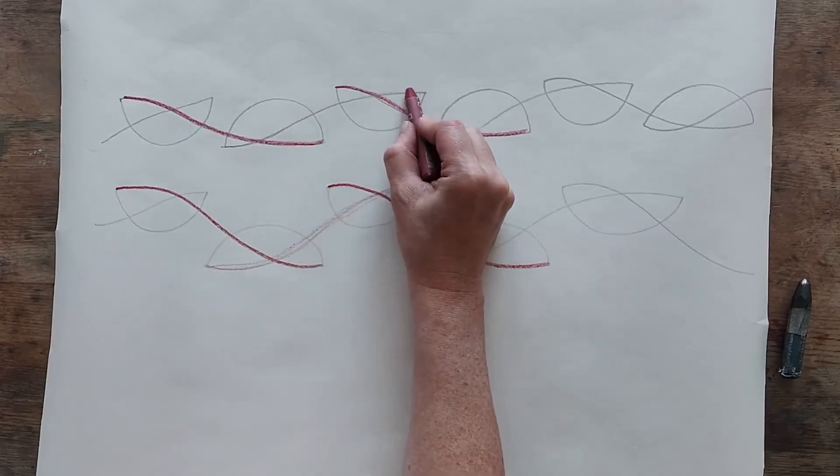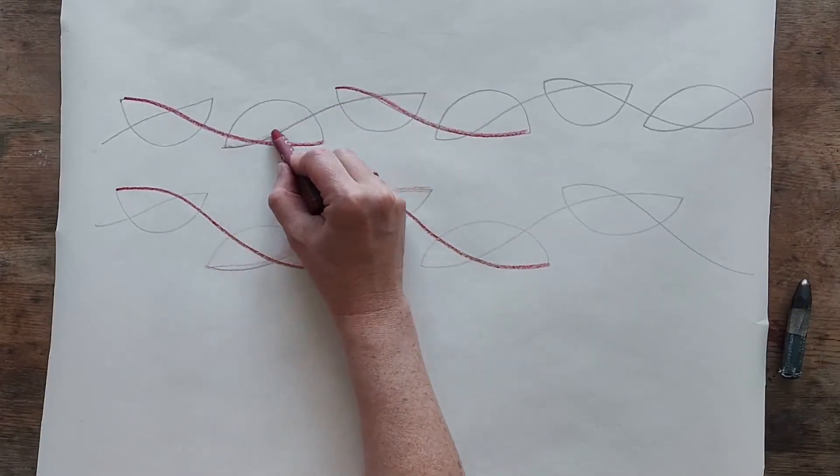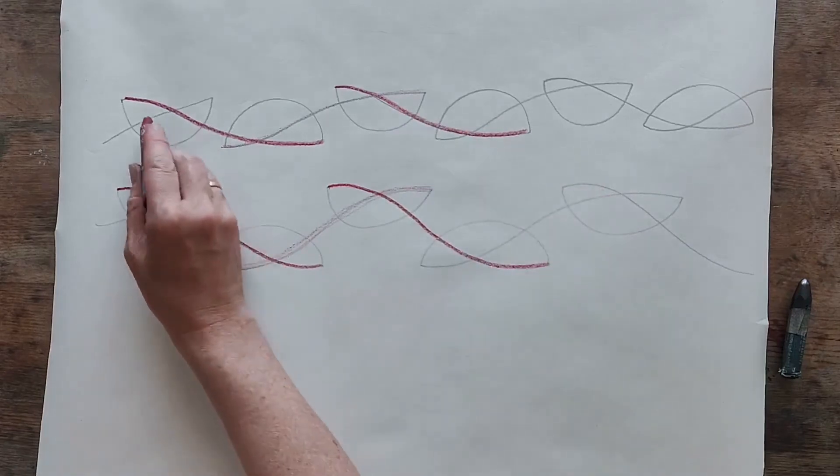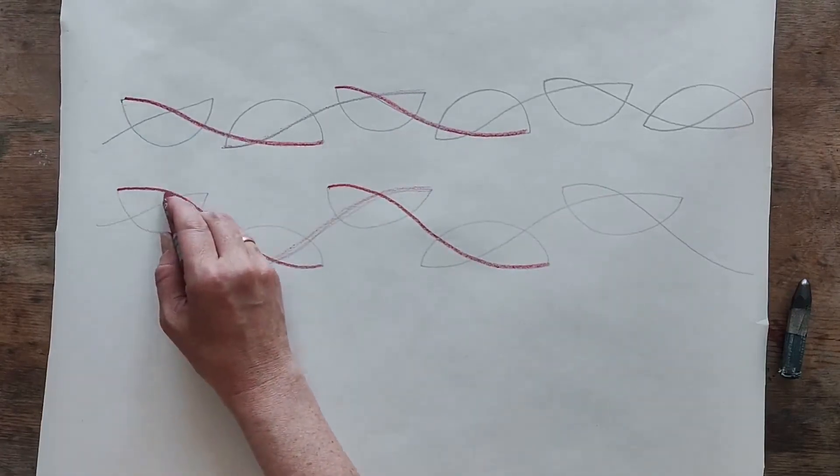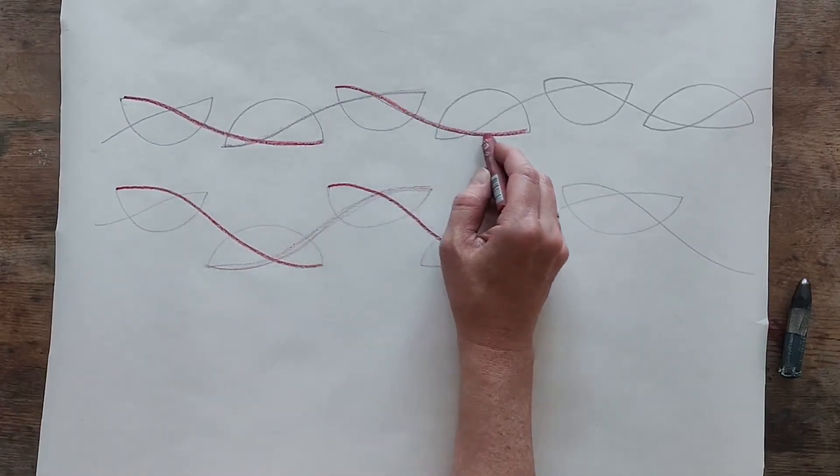Likewise here, you can see this line here. You can see this line here as well. It's important. Just to really illustrate, I draw these up in a fat red line.